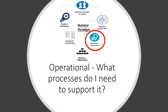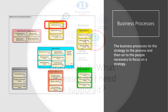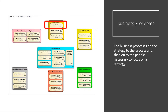Continuing around the loop, we come to the business process area. These are the business processes that support the value streams in the previous area. This area was started with a BPM created by ARTS. However, I've added a lot of missing information I've learned from these 1450 subject matter experts over the last 20 years. The business processes tie the strategy to the process and then on to the people necessary to focus on the strategy. In this case, we're starting off with the manage-the-sale process.